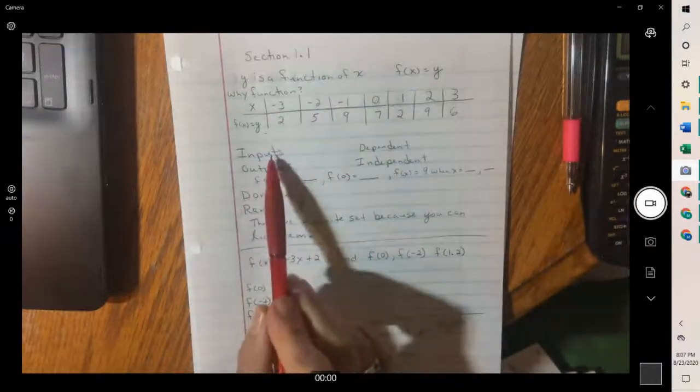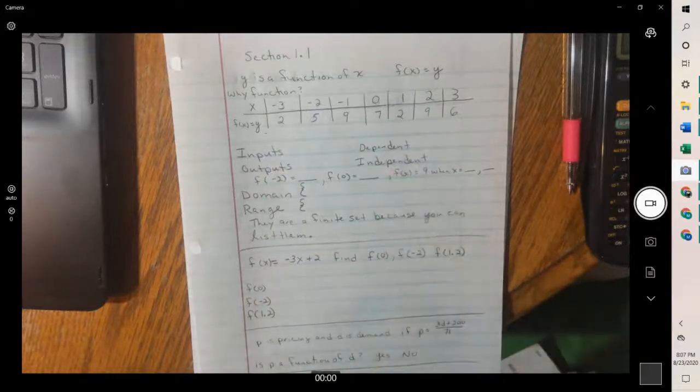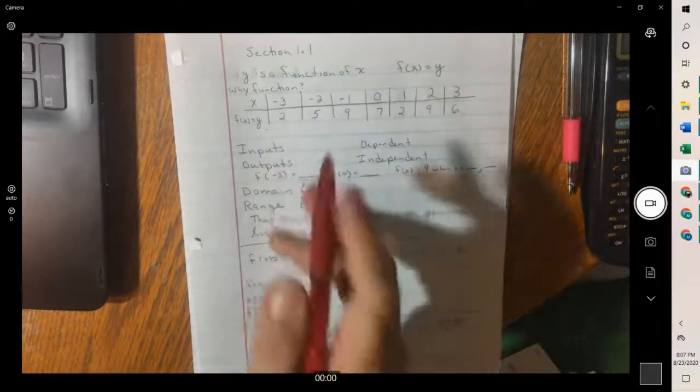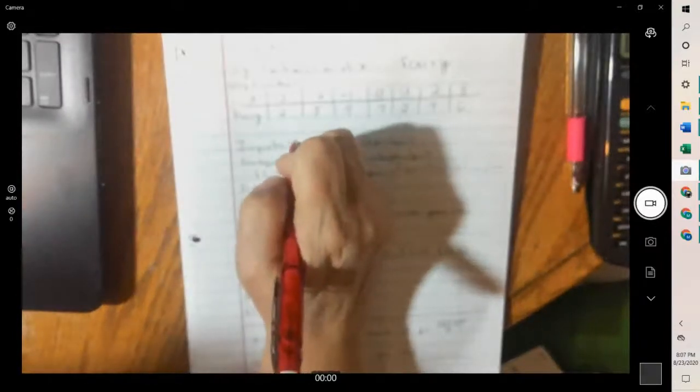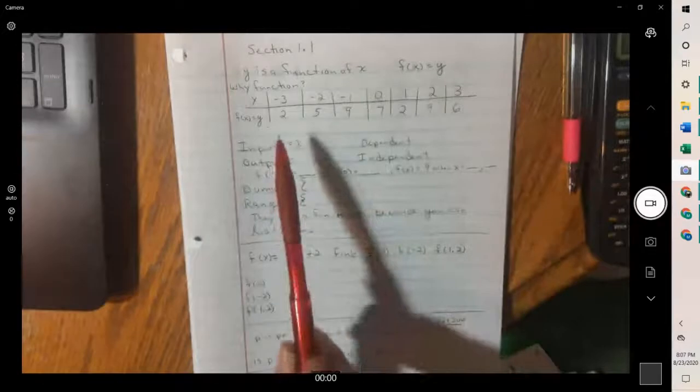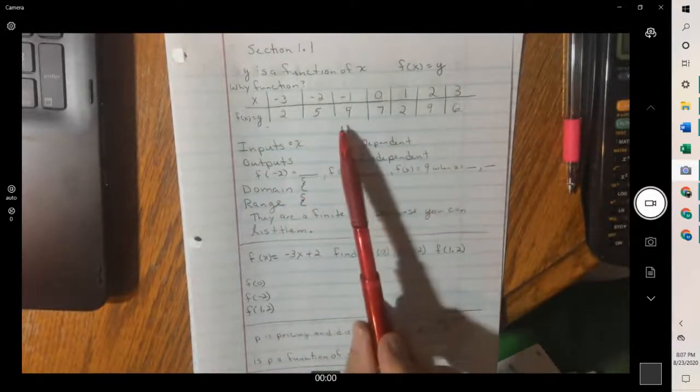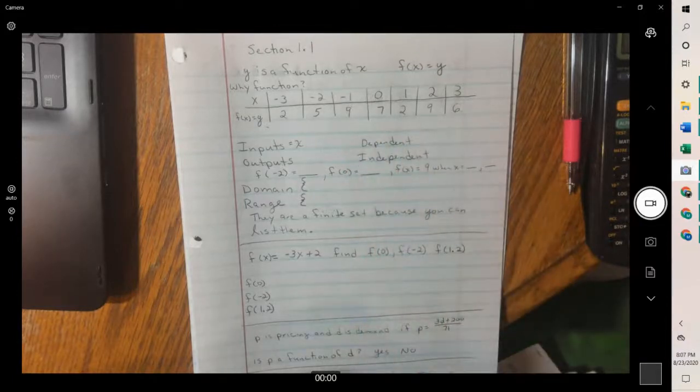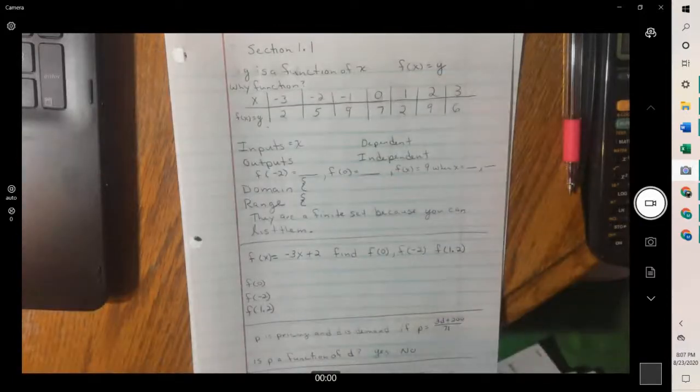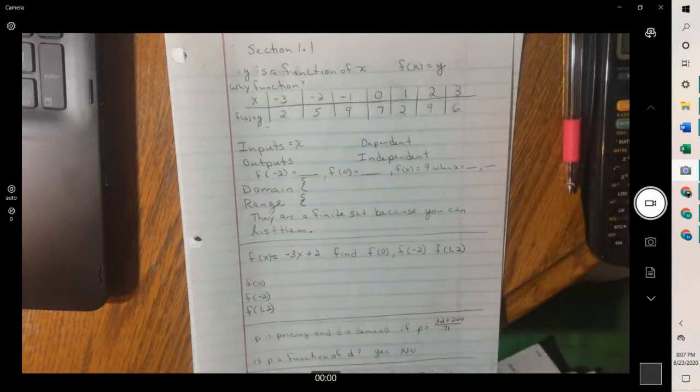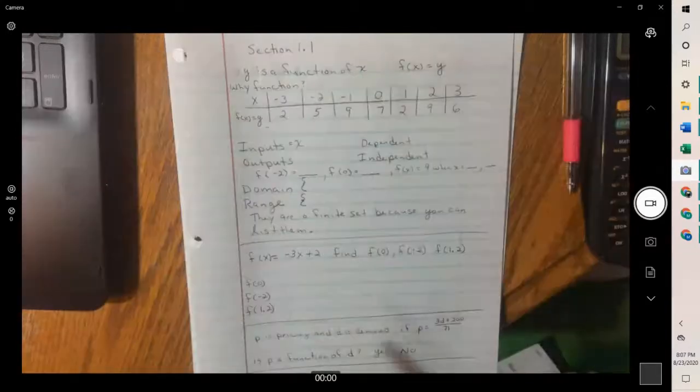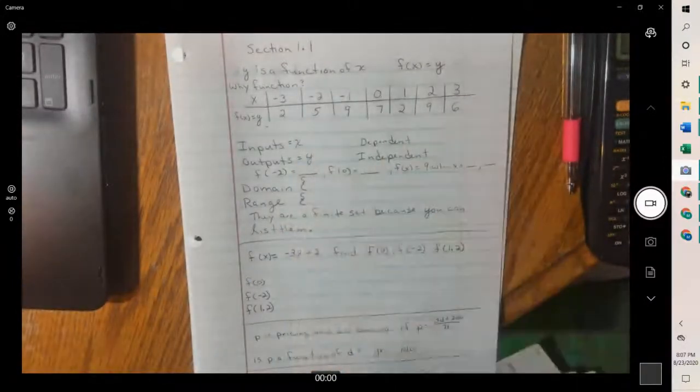And that's how we also know what the input and the output or the dependent and independent variable is. The input is always the x values. And it cannot, in this case, be the y values because the y's repeat. So that means for nine, we have two different x values. And that's fine as long as for x, we don't have two values. And so your output would be y. So this is a function because the x values do not repeat.